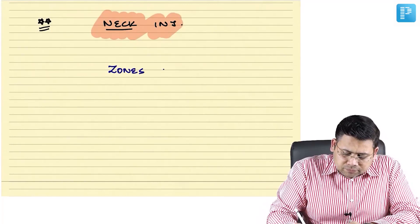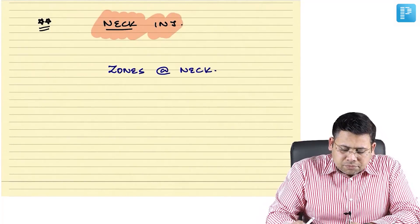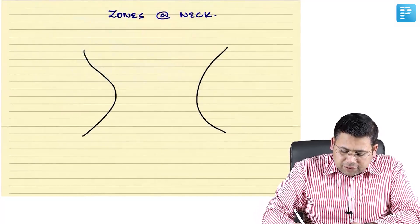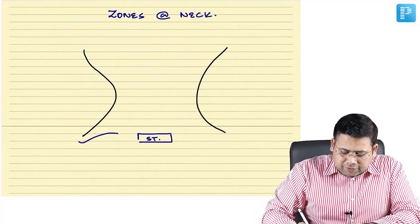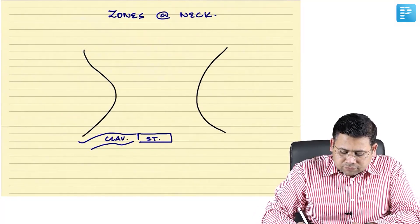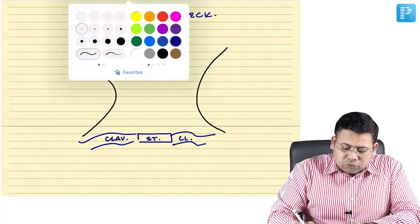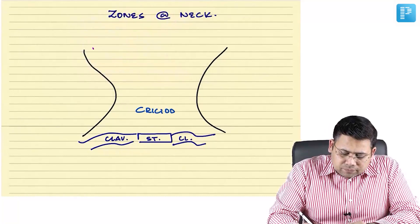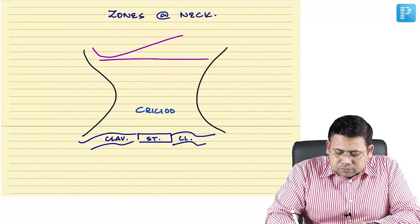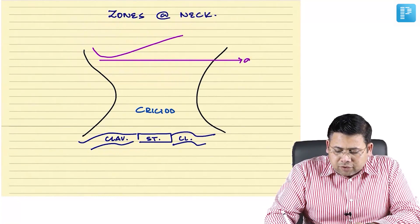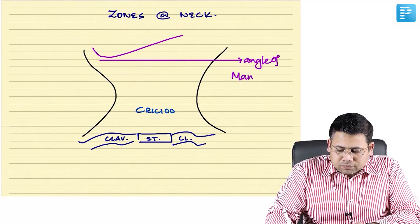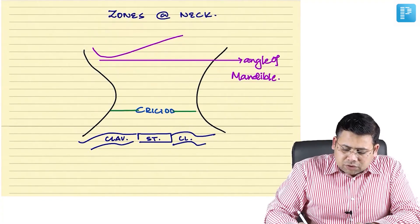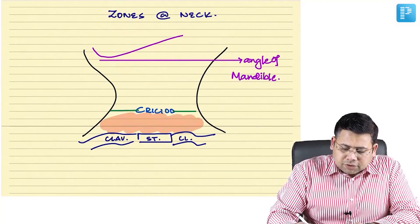There are three important zones of neck. At the level of sternum or clavicle, up to the cricoid, we have zone 1. From the cricoid up to the angle of mandible, we have zone 2.